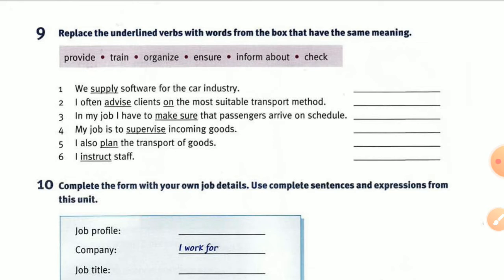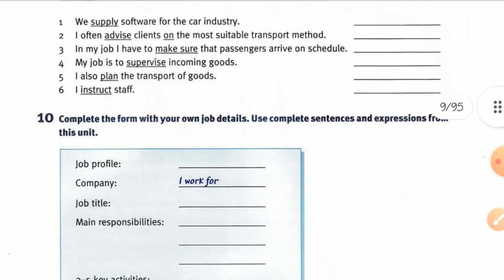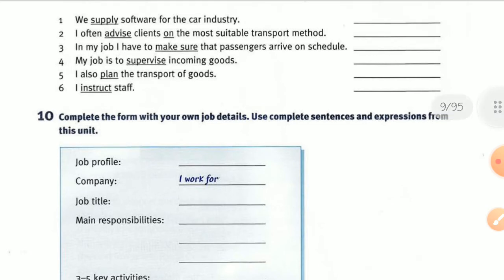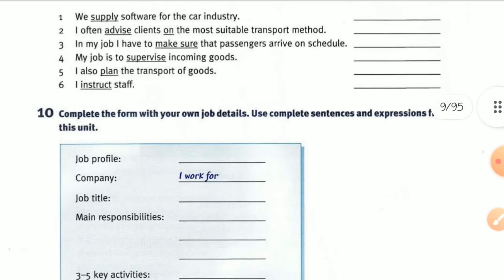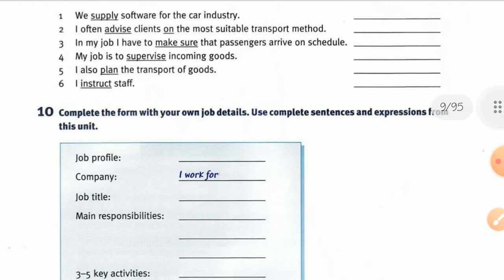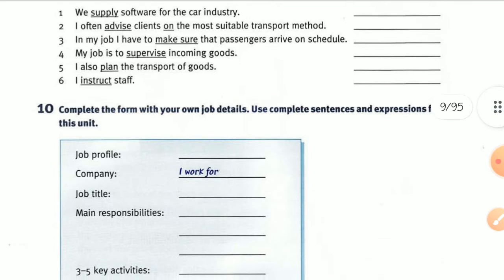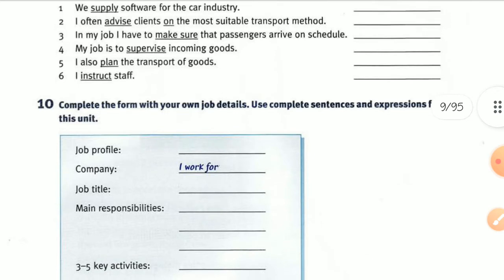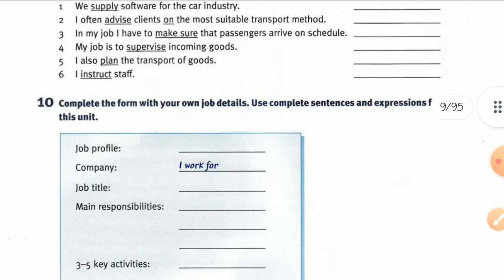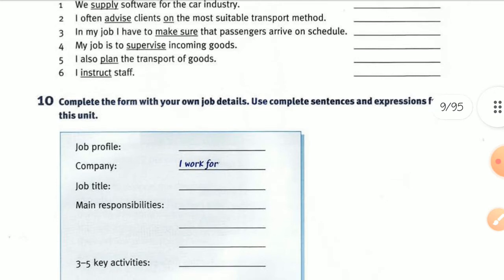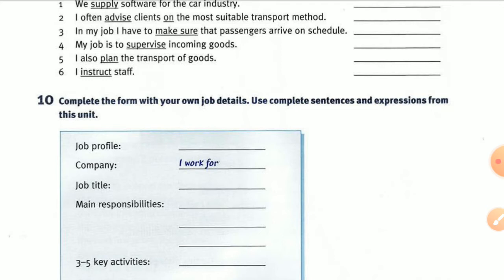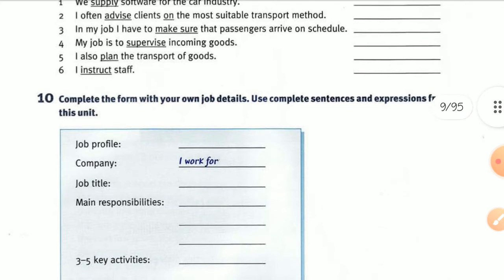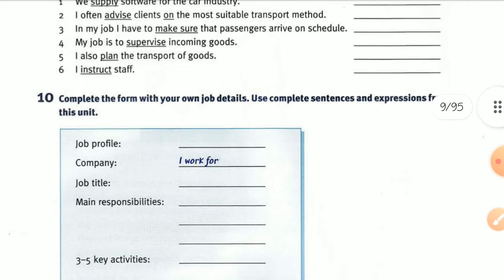Number two: I often advise clients on the most suitable transport mode. Number three: in my job I have to make sure that passengers arrive on time. Number four: my job is to supervise incoming goods. I also plan the transport of goods, and the last one: I instruct staff.